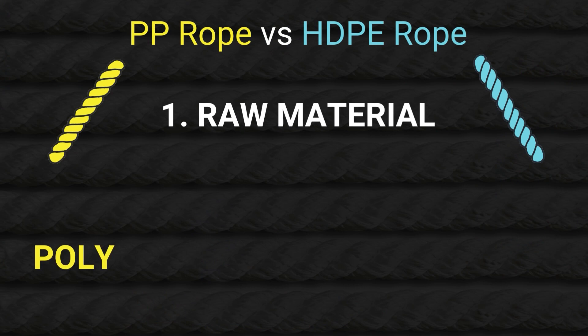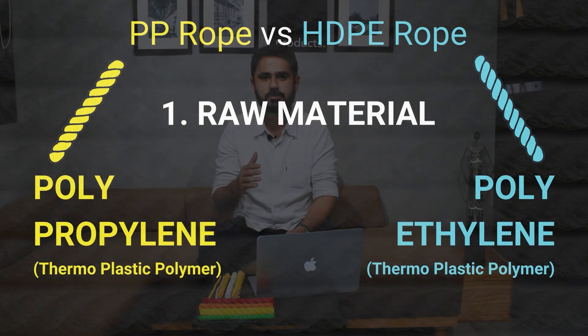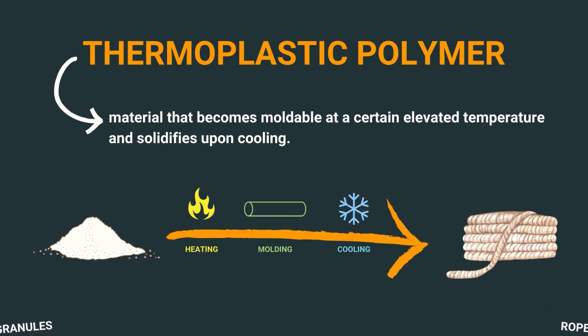The first way to differentiate PP ropes and HDPE ropes is based on the raw materials. The names themselves contain the raw material: PP stands for polypropylene, and HDPE is a type of polyethylene called high density polyethylene. Both of them are thermoplastic polymers, meaning at a certain temperature they change shape, and when cooled down they return to solid form.